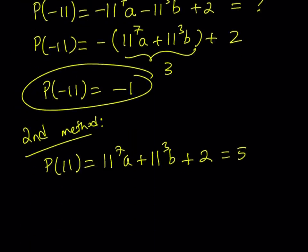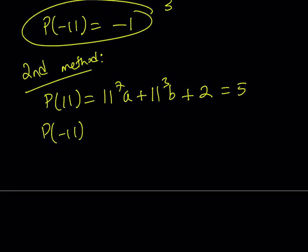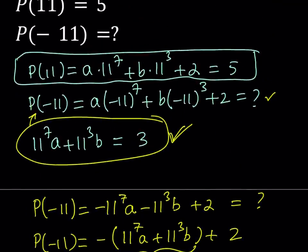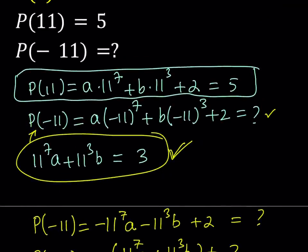So I know that, and I'm trying to find P of negative 11. Let's write down P of negative 11. That could be written as negative 11 to the 7th A plus, actually that should be a minus sign, minus 11 to the 3rd B, and then, of course, plus 2. Notice that 2 is a constant, so we're always going to add the 2 at the end.